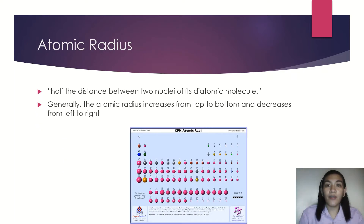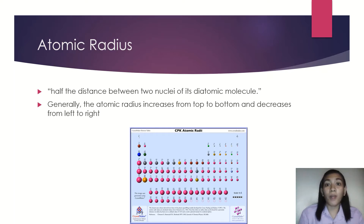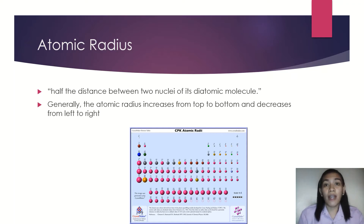First, we have the atomic radius. The atomic radius refers to half the distance between two nuclei of its diatomic molecule. For its trend, generally the atomic radius increases from top to bottom and decreases from left to right. This means the atomic radius of elements at group 1 is generally larger compared to those at groups 7 and 8.